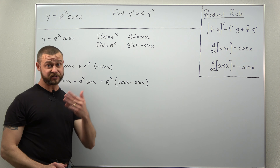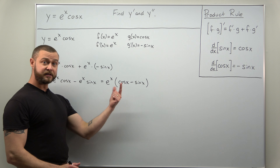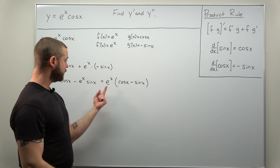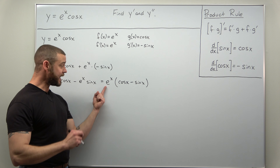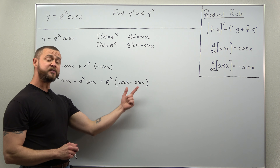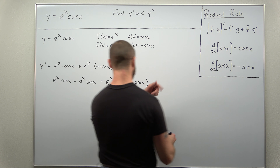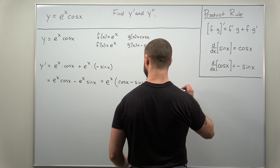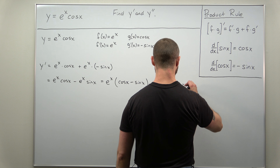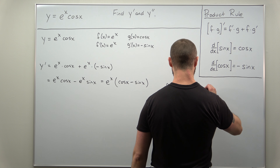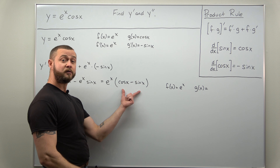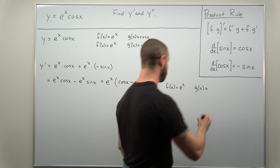From here it's straightforward. We're going to apply divide and conquer again and identify the pieces. We'll call f equal to e to the x, and the part in parentheses will be g of x — cosine of x minus sine of x.